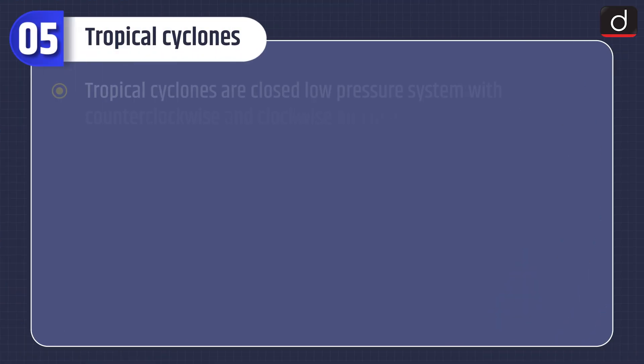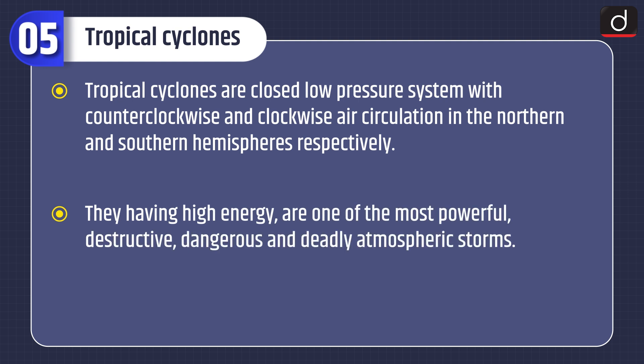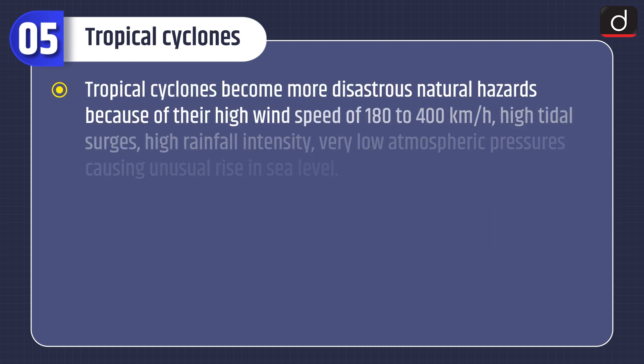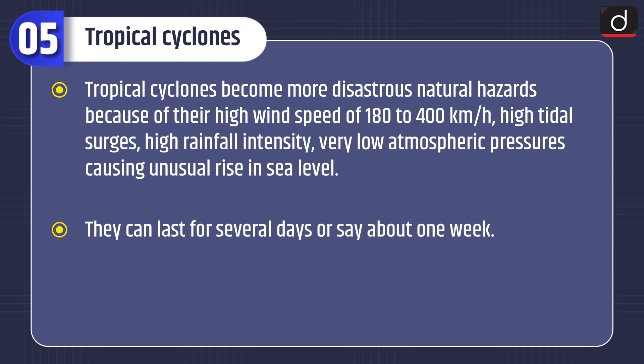Now let's discuss about tropical cyclones. Tropical cyclones are closed low pressure systems with counterclockwise and clockwise air circulation in the northern and southern hemispheres respectively. Having high energy, they are one of the most powerful, destructive, dangerous and deadly atmospheric storms. Tropical cyclones become more disastrous natural hazards because of their high wind speed of 180 to 400 km per hour, high tidal surges, high rainfall intensity, and very low atmospheric pressures causing an unusual rise in sea level.